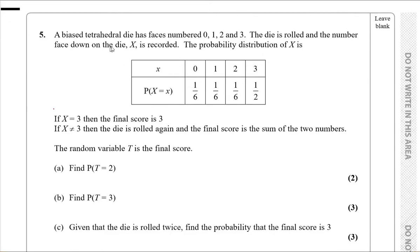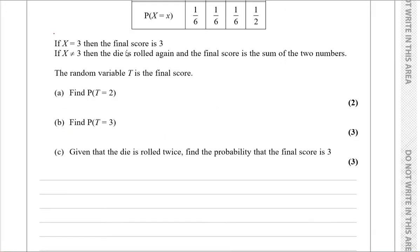Question number five: a biased tetrahedral die has faces numbered 0, 1, 2, and 3. The die is rolled and the number facing down, X, is recorded. The probability distribution of X is given: P(0) = 1/6, P(1) = 1/6, P(2) = 1/6, and P(3) = 1/2. If X equals 3, the final score is 3. If X is not equal to 3, the die is rolled again and the final score is the sum of the two numbers. The random variable T is the final score.